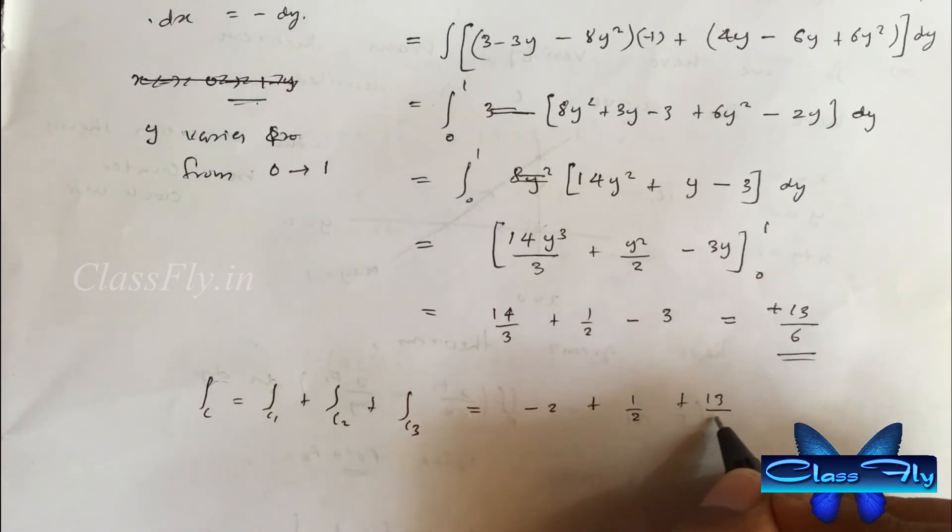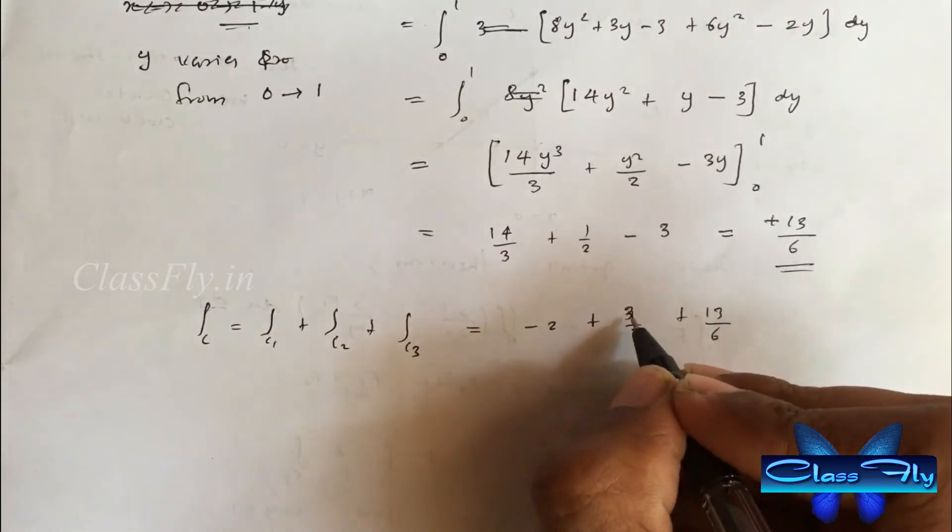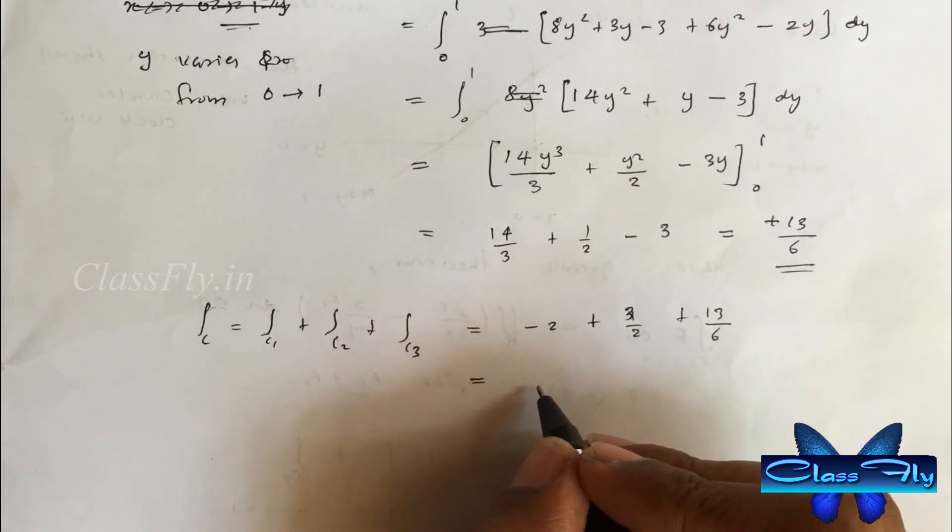Integral c equal to integral c1 plus integral c2 plus integral c3, which is equal to minus 2 plus 3 by 2 plus 13 by 6, which is equal to 5 by 3.